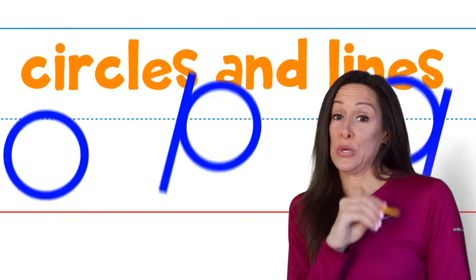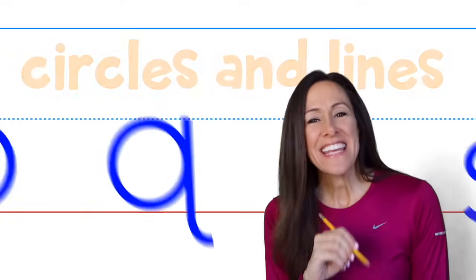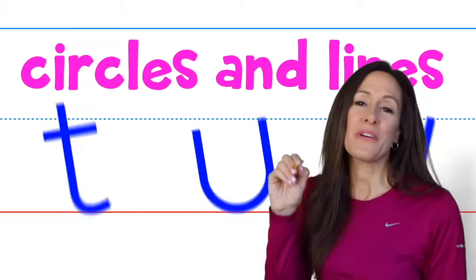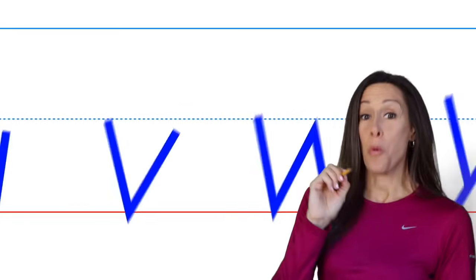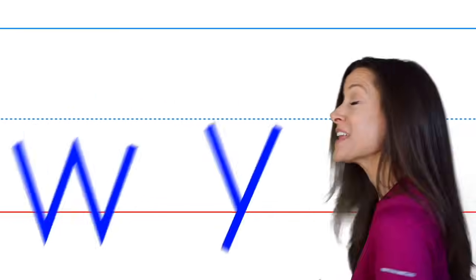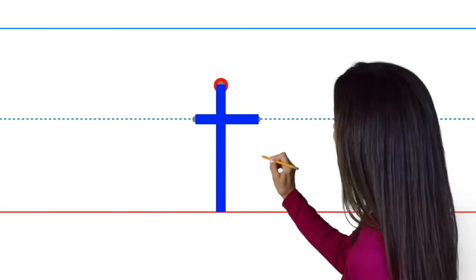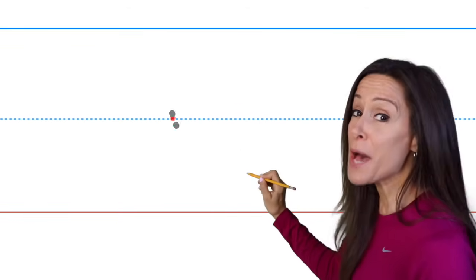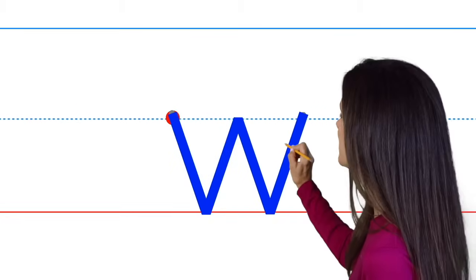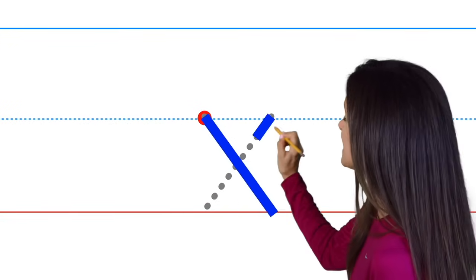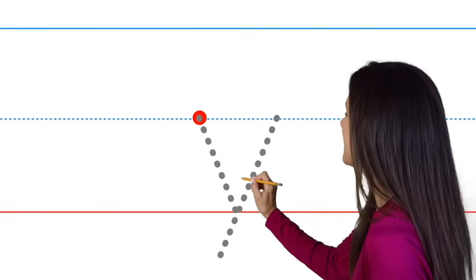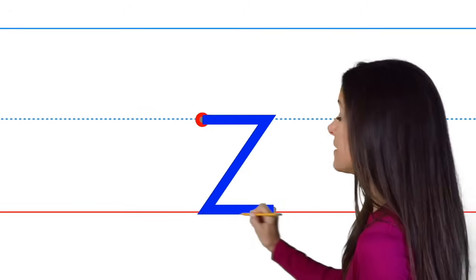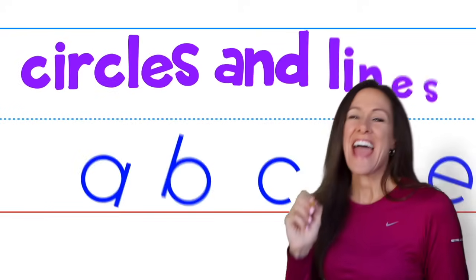Circles and lines, circles and lines. These are the letters with circles and lines. Circles and lines, circles and lines. Let's write them out one at a time. T is a line with another line across it. V is two slant lines connected just a bit. W has four slant lines down, up, down, up. X is two slant lines across in the middle. Y is a slant line right, then up and down. Z is a zigzag right, down, right, crowned.